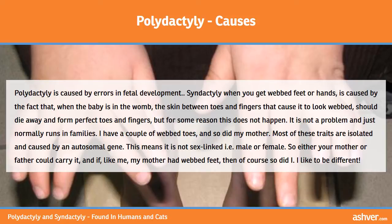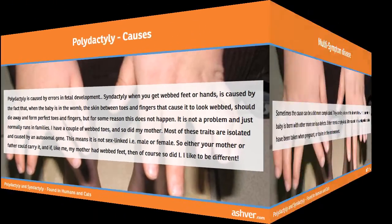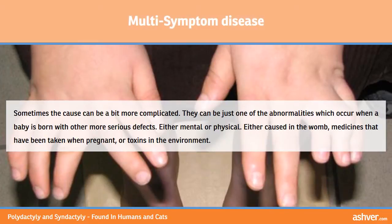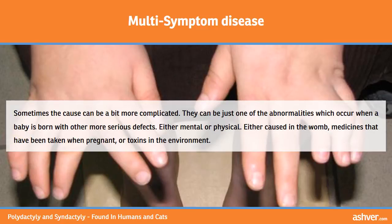Most of these traits are isolated and caused by an autosomal gene. This means it is not sex-linked — that is, male or female. So either your mother or father could carry it, and if, like me, my mother had webbed feet, then of course so did I. Sometimes the cause can be a bit more complicated. They can be just one of the abnormalities which occur when a baby is born with other more serious defects, either mental or physical — caused in the womb, by medicines taken when pregnant, or by toxins in the environment.